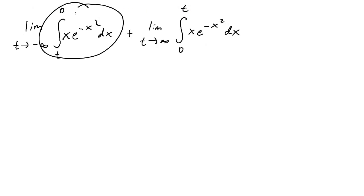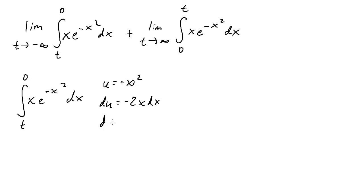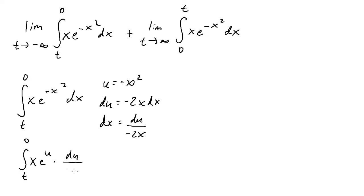Evaluating the first integral using u-substitution: set u equal to negative x squared, so du equals negative 2x dx, meaning dx equals du over negative 2x. Substituting back, the x's cancel and we get negative one-half times the integral of e to the u du, which equals negative one-half times e to the negative x squared, evaluated from t to zero.